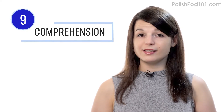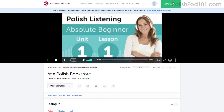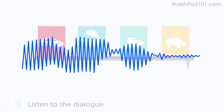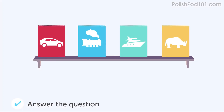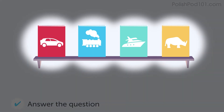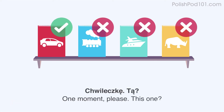Number nine: take the listening comprehension lessons. These lessons are designed to test your listening skills. You'll hear a dialogue in the target language and, based on the dialogue, you'll be asked to answer a question to check if you understood. There are no translations here, except for the subtitles. Read along with the subtitles to understand everything.